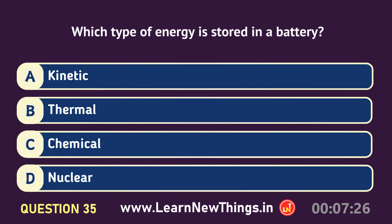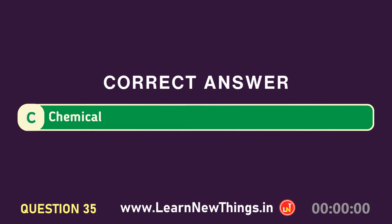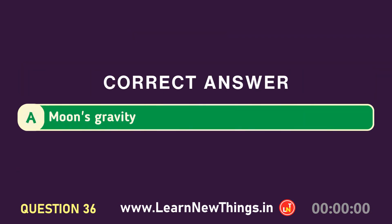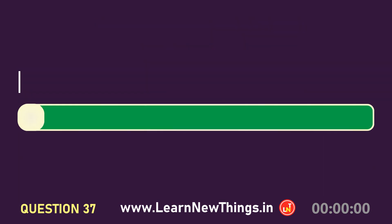Which type of energy is stored in a battery? Chemical. What causes tides on Earth? The Moon's gravity. How many teeth are typically found in an adult human mouth? Thirty-two.